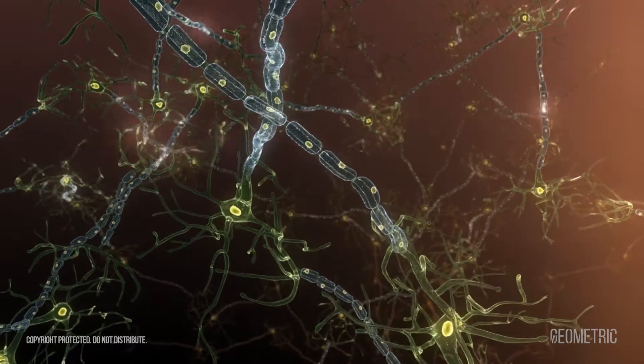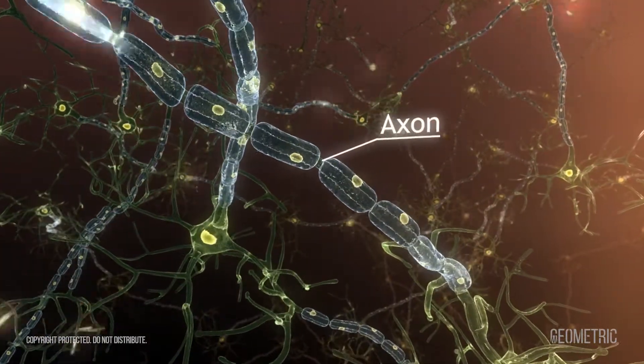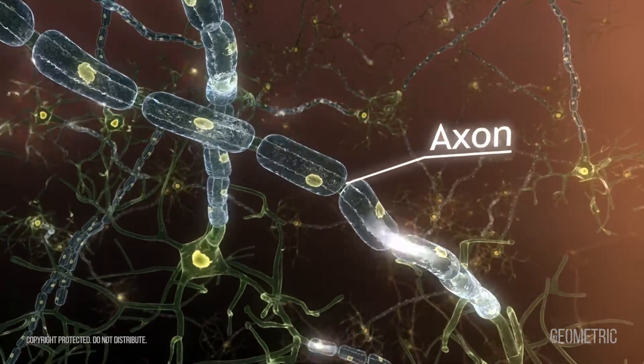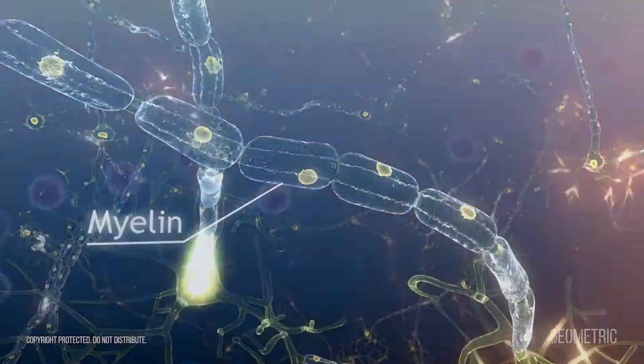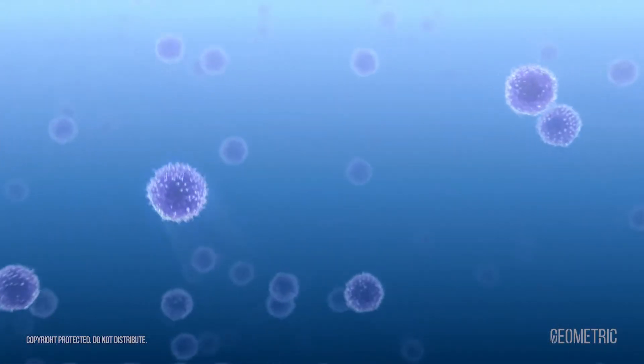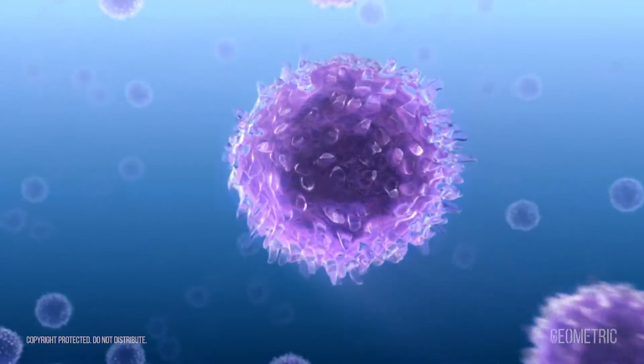Nerve cells communicate by sending electrical signals down long fibers called axons, which are contained within an insulating substance called myelin. Evidence suggests that MS results from an autoimmune reaction in which a malfunctioning immune system produces t-cells that react with and damage the body's own cells.